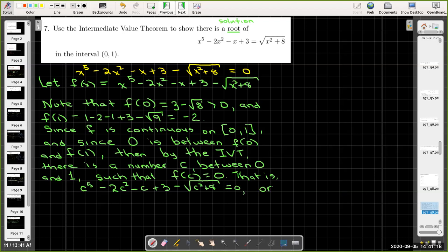Or c to the power of 5 minus 2c squared minus c plus 3 equals radical c squared plus 8.